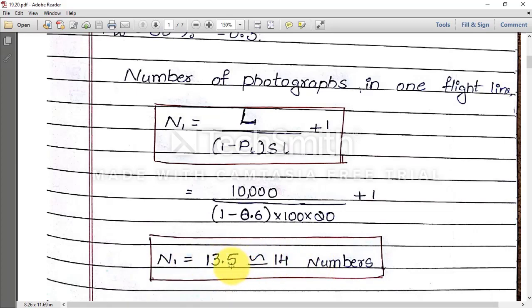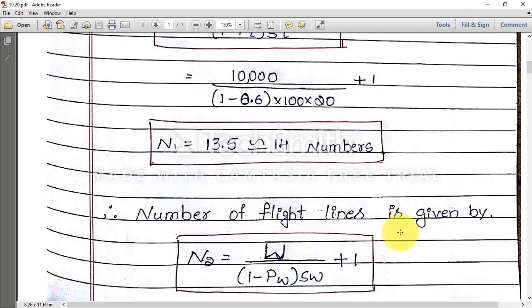That means if photograph is extra, no problem, but area should not be missed in the surveying. That's why you need to round up to the next number. Therefore N1 = 14 numbers is required. So next, number of flight lines is given by N2 = W / [(1 - PW) × S × W] + 1.